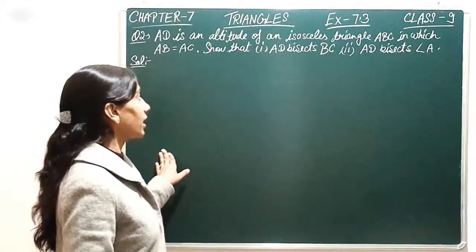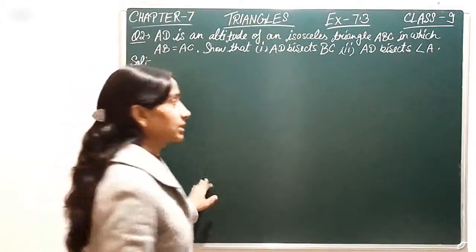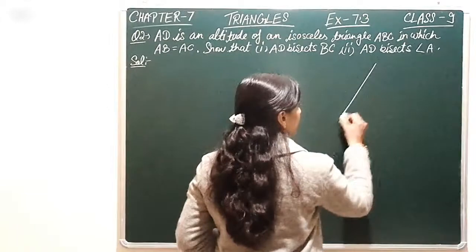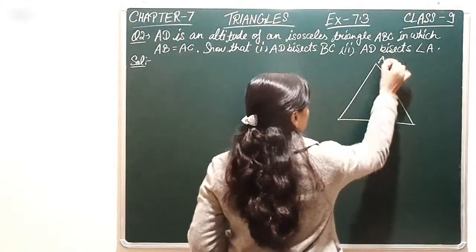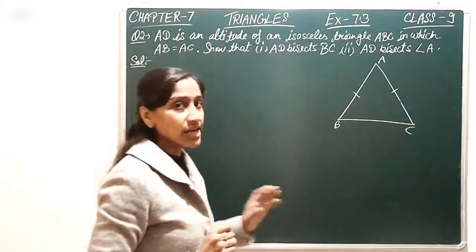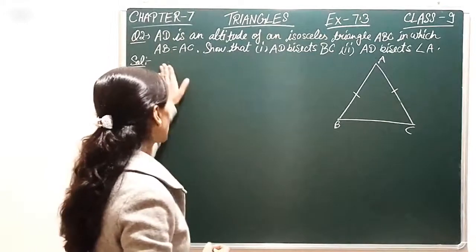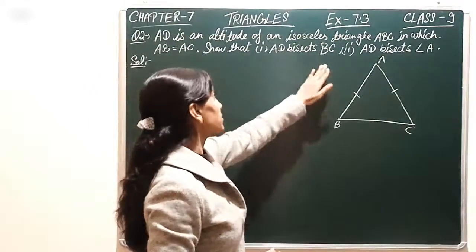AD is an altitude of an isosceles triangle ABC. That means you have an isosceles triangle ABC where AB is equal to AC. This is an isosceles triangle in which AB equals AC. Show that AD bisects BC.